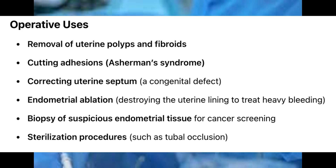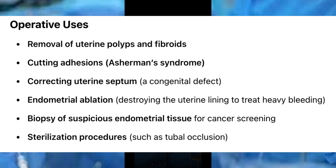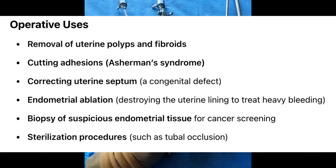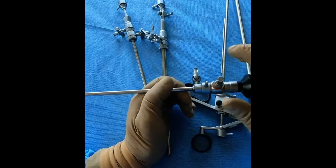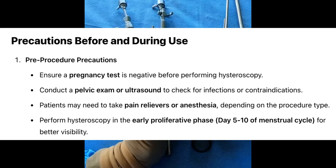Operative uses include: removal of uterine polyps and fibroids; cutting adhesions (Asherman syndrome); correcting uterine septum, a congenital defect; endometrial ablation — destroying the uterine lining to treat heavy bleeding; biopsy of suspicious endometrial tissue for cancer screening; and sterilization procedures such as tubal occlusion.